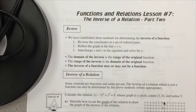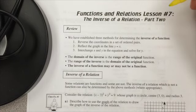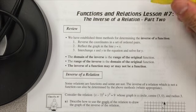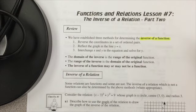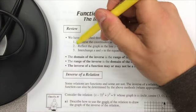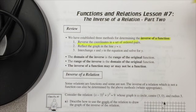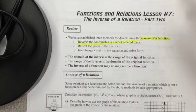Welcome to lesson number seven. We're going to talk about part two of the inverse of a relation. We talked about three different methods for determining the inverse of a function. One of those was to reverse the coordinates in the set of ordered pairs — so if you have an x and y value, you reverse those: the x value becomes the y value and the y value becomes the x value.